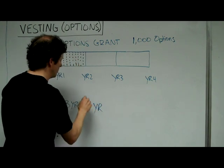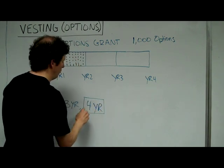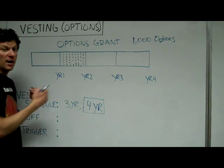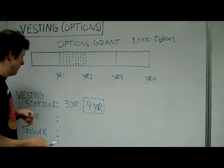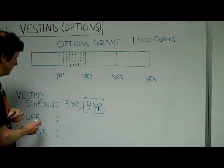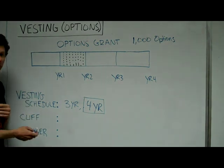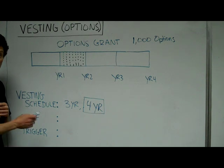So that means your options are going to take four years to completely vest, and you get them over time. Also, there are some concepts we'll discuss like a cliff and a trigger, and we'll fill those in as we go.